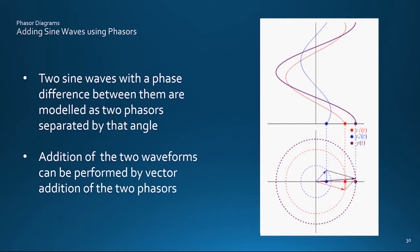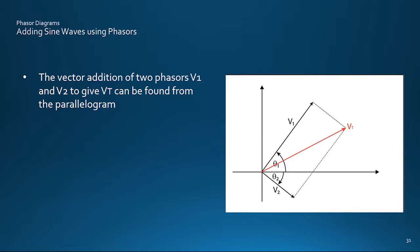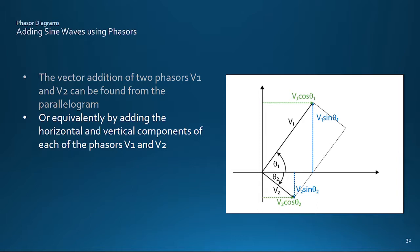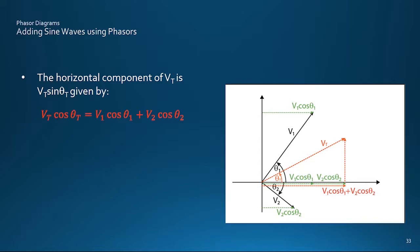And we can confirm this by comparing the result of the previous trig calculations with that of adding the two phasors, which can be done like normal vector addition by completing the parallelogram, or equivalently by adding the horizontal and vertical components of each vector.